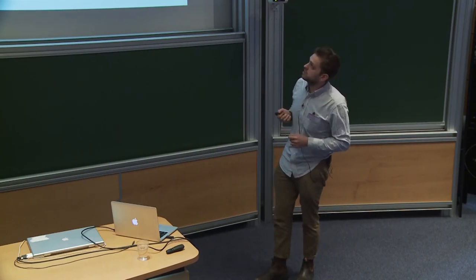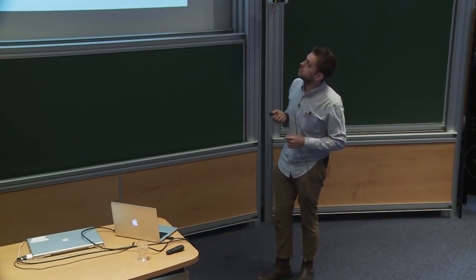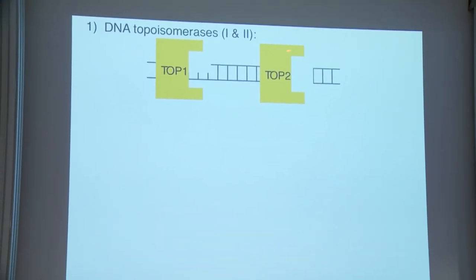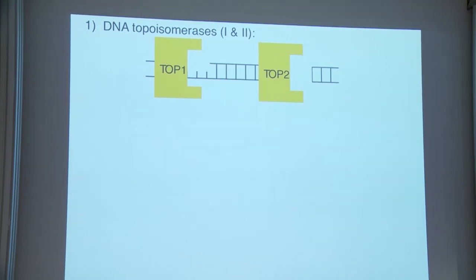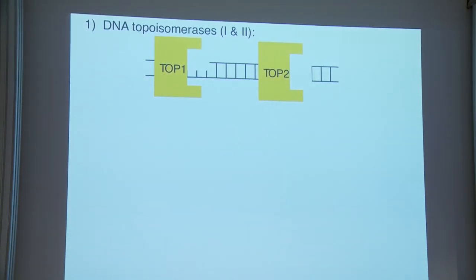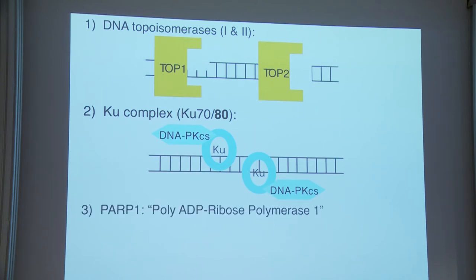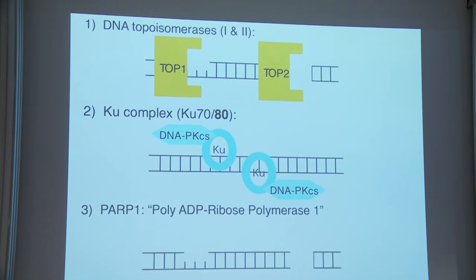The four top hits were: topoisomerase 1, which makes single-stranded DNA breaks, and topoisomerase 2, which makes double-stranded breaks — both involved in re-ligation. Then the Ku complex, involved in sensing DNA damage at an early stage, which forms a complex with DNA-PK-CS called DNA-PK. And lastly PARP-1 (poly-ADP ribose polymerase 1), which is thought to be involved in sensing DNA damage.